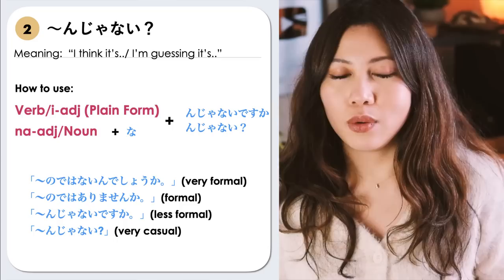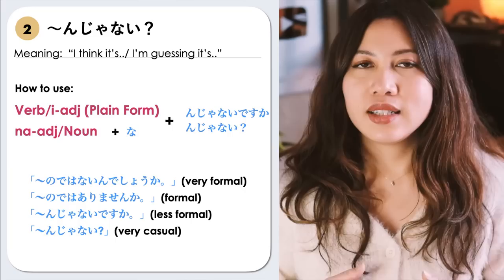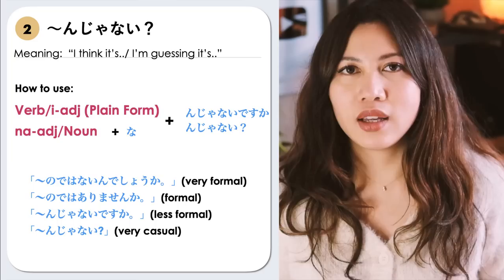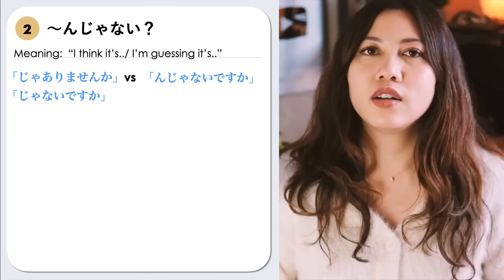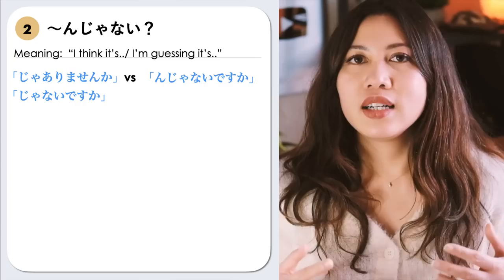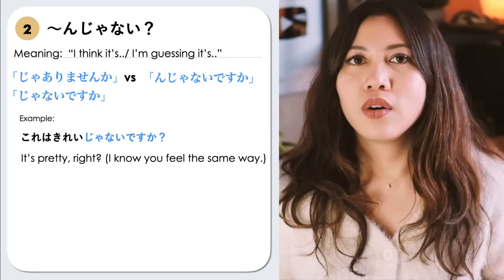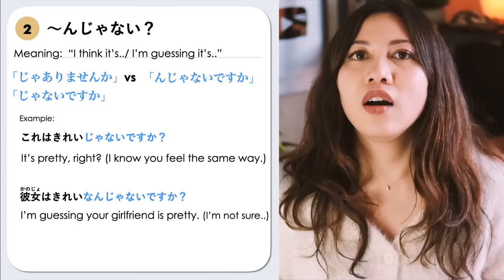Here are the levels of formality using this pattern. The very formal is 何々のではないんでしょうか. Next is 何々のではありませんか. Less formal is んじゃないですか. And the very casual way is んじゃない, which is used when talking to a very close friend. You probably remember じゃありませんか or じゃないですか. This is different from んじゃないですか. じゃないですか means 'right?' or 'isn't it?' — for example, これはきれいじゃないですか means 'It's pretty, right?' — implying you know the other person agrees.